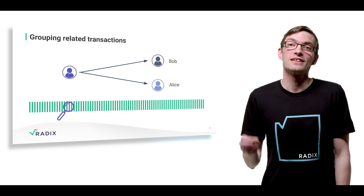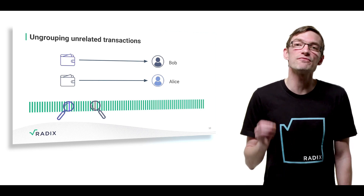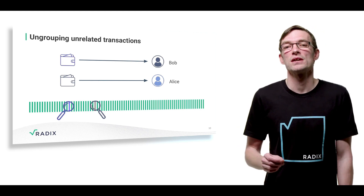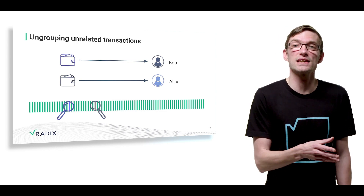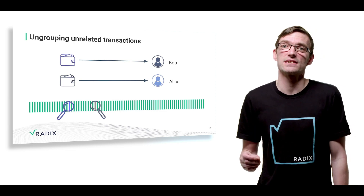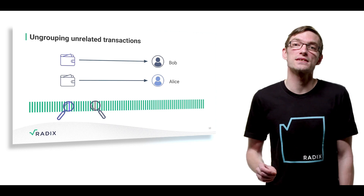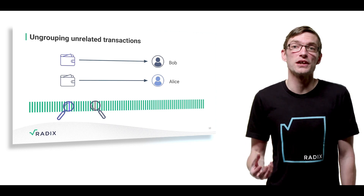This deterministic data structure ensures that two transactions on two different shards are in no way related. If I send transactions to Alice and to Bob from two different accounts, then they cannot be related and therefore there is no need to make sure the transactions don't conflict — they are already provably unrelated. This allows unrelated transactions to be totally asynchronous, meaning that 18.4 quintillion shards can process transactions simultaneously and in parallel.